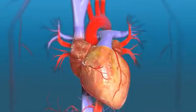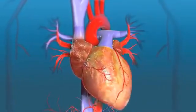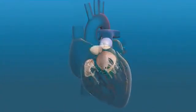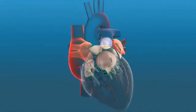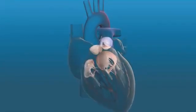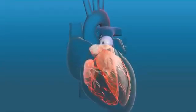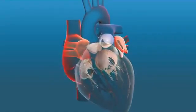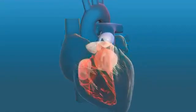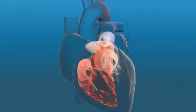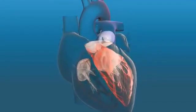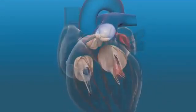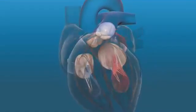The heart is a muscular organ that pumps blood through the body. It consists of four chambers. The upper chambers are the right and left atria. The lower chambers are the right and left ventricles, which connect to their respective atria. The right ventricle connects to the pulmonary artery and the left ventricle to the aorta. Valves are located at these connections to ensure that blood moves in only one direction.